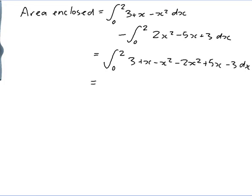And that is the integral from 0 to 2 of, well my 3 and my minus 3 cancel. I have x and 5x gives me 6x. And I have minus x squared minus 2x squared gives minus 3x squared.